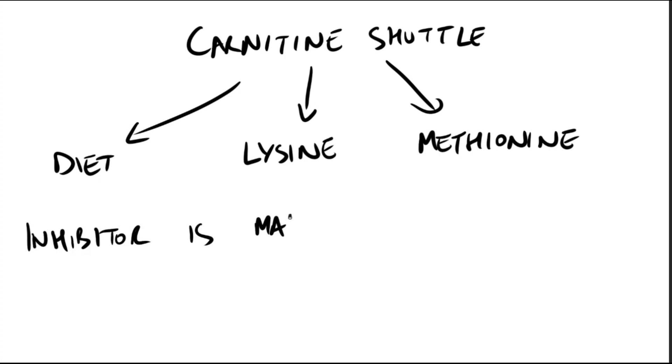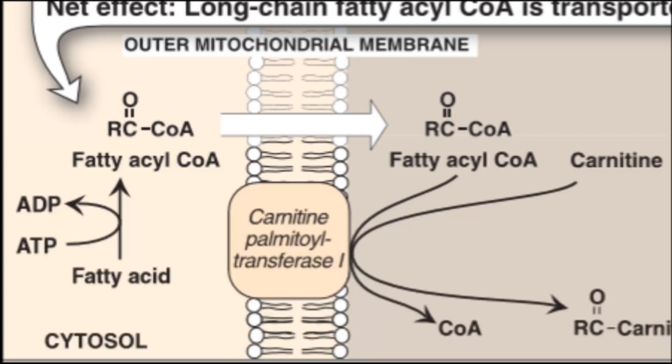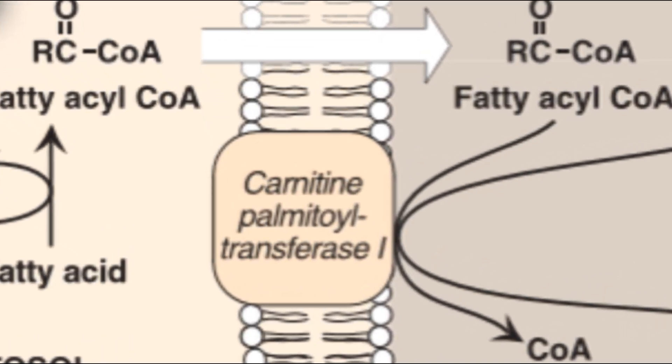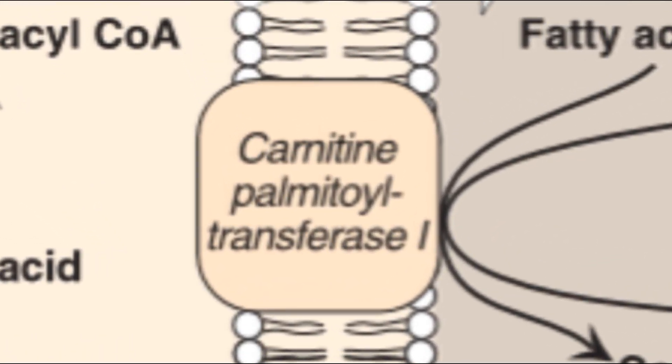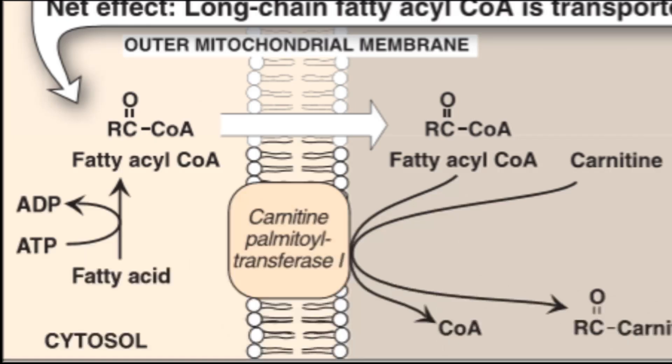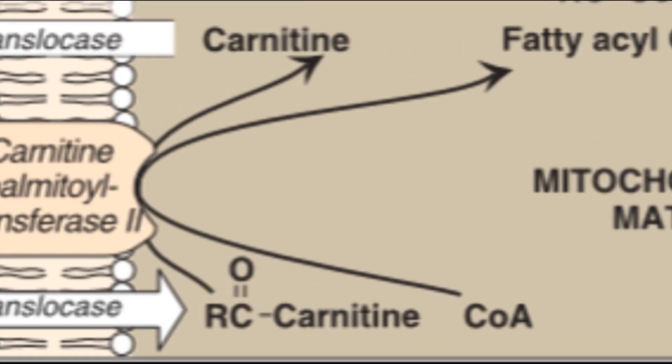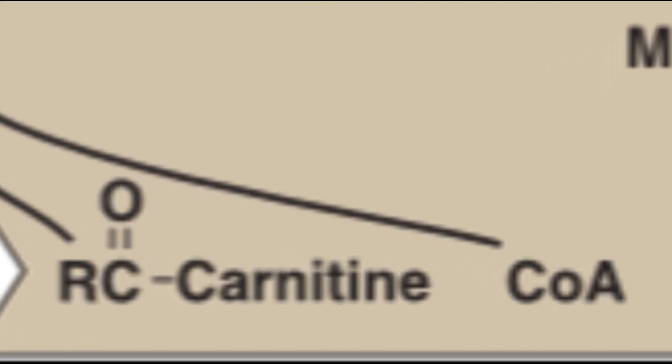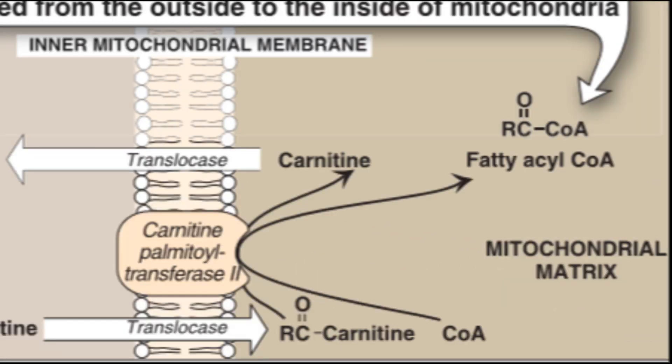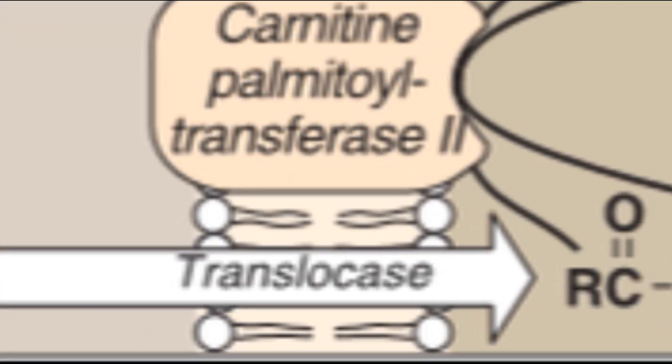The inhibitor of this shuttle is malonyl coenzyme A. First, the acyl group is transferred by carnitine palmitoyl transferase 1, which is known as CPT1. Malonyl coenzyme A is the inhibitor of this specific enzyme. It's also known as CAT1, being carnitine acyl transferase 1. It forms acyl carnitine and regenerates the coenzyme A. This is transported into the mitochondrial matrix in exchange for free carnitine by carnitine acyl carnitine translocase.